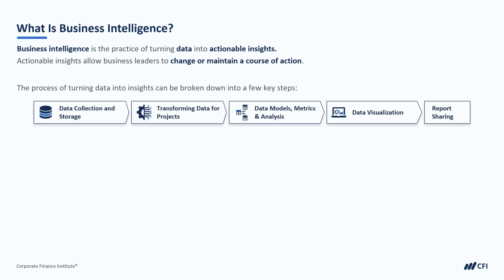The BI process of turning data into insights can be broken down into a few more granular steps. We tend to start with data collection and storage, then transform that data into a format more appropriate for our projects. Using that data, we create data models, metrics, and analyse the data before creating visualisations. Then we share the report with any business stakeholders that need to see it.